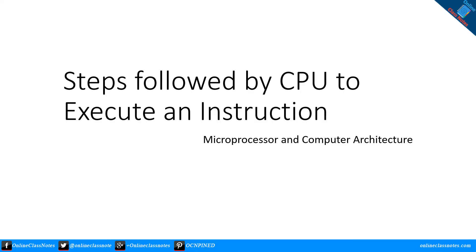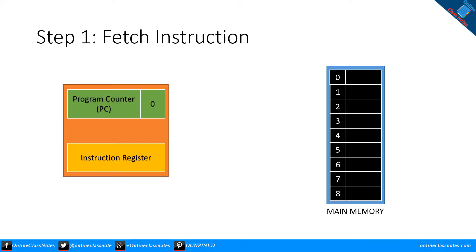Step 1: Fetch instruction. The instruction execution cycle starts with fetching an instruction from main memory. The instruction at the current program counter (PC) will be fetched and stored in the instruction register (IR).